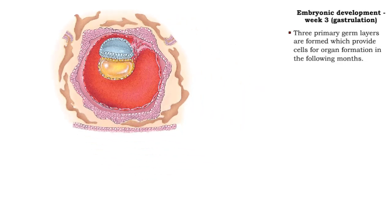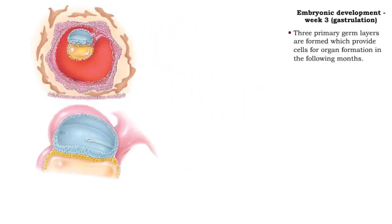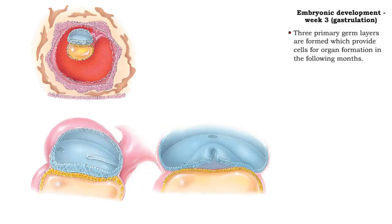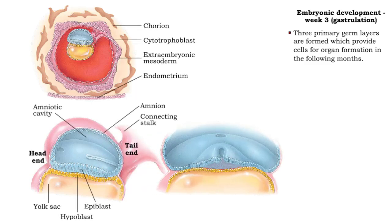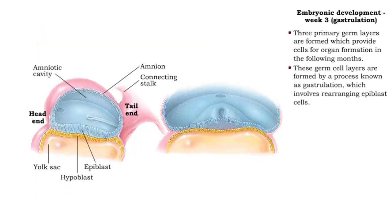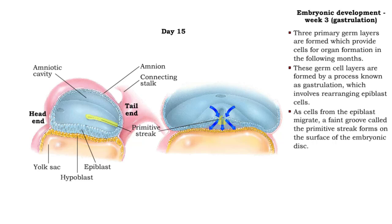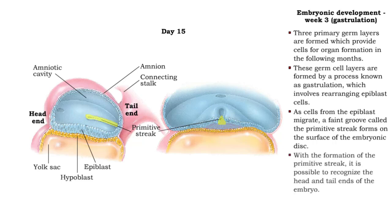During the third week after fertilization, the three primary germ layers are formed, which provide cells for organ formation in the following months. These germ cell layers are formed by a process known as gastrulation, which involves rearranging epiblast cells. As cells from the epiblast migrate, a faint groove called the primitive streak forms on the surface of the embryonic disc. With the formation of the primitive streak, it is possible to recognize the head and tail ends of the embryo.